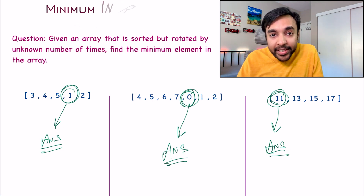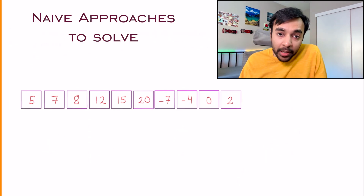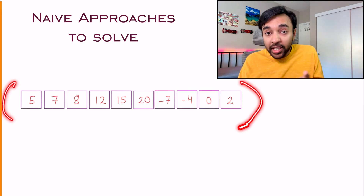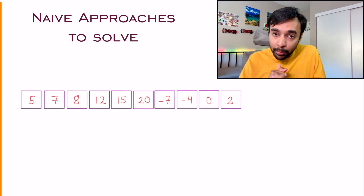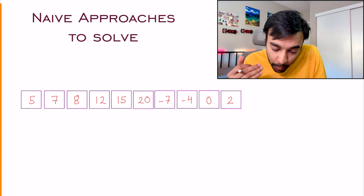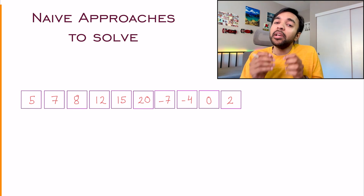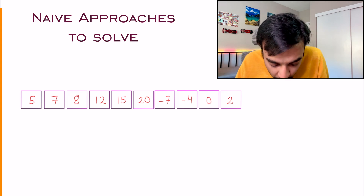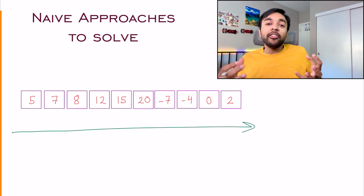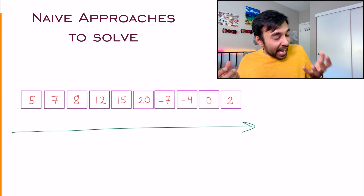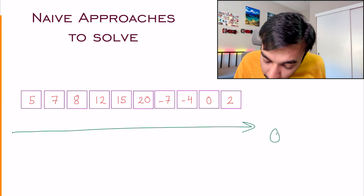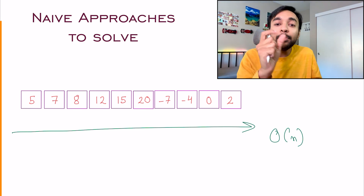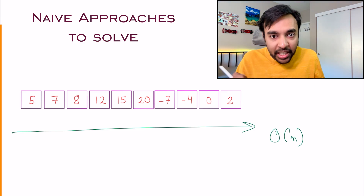So how do you go about solving it? To start understanding the problem, let us take up a bigger test case. Notice that the array is sorted and rotated by an unknown number of times. If you have to approach this problem in the most naive way, the first approach that will come to your mind is: scan the entire array and find out the minimum element. That works — you will be able to find the minimum element in O(n) time complexity, just scanning the array and keeping track of the minimum.